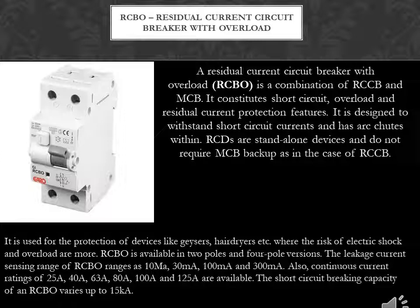RCBOs are used for the protection of devices like geysers, hair dryers, etc., where the risk of electric shock and overload are high. RCBOs are available in two-pole and four-pole versions. The leakage current sensing range of RCBO is 10 mA, 30 mA, 100 mA, and 300 mA. Continuous current ratings of 25 A, 40 A, 63 A, 80 A, 100 A, and 125 A are available.